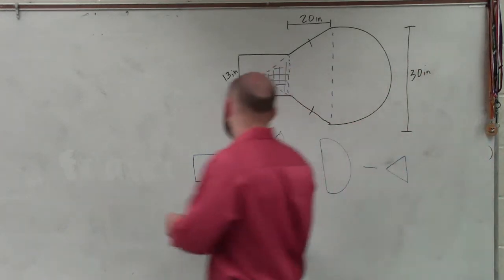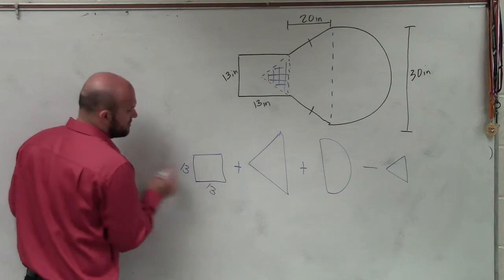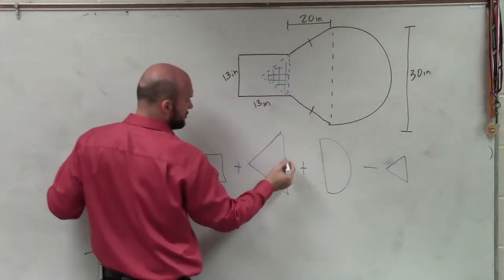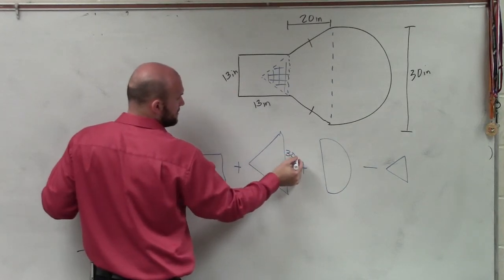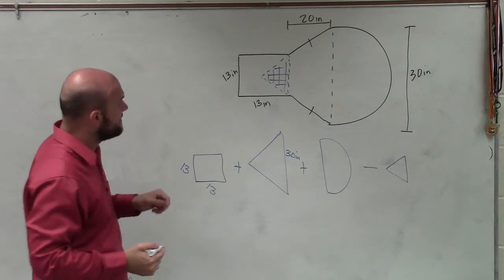So this square is 13 inches by 13 inches. The larger triangle, this length, is 30 inches. And now what we need to do is define what is the height.